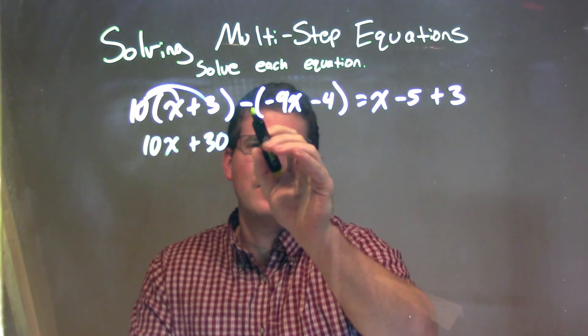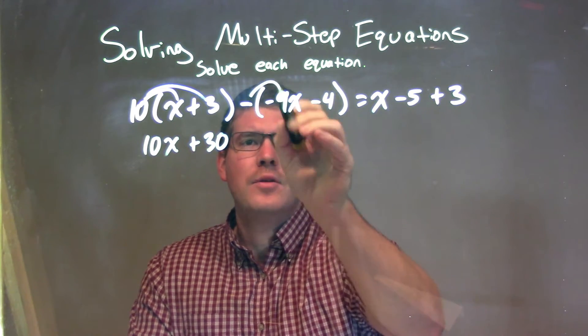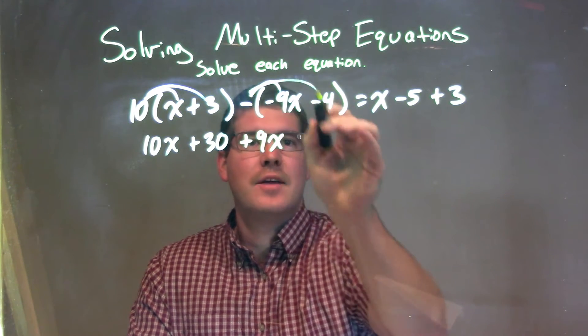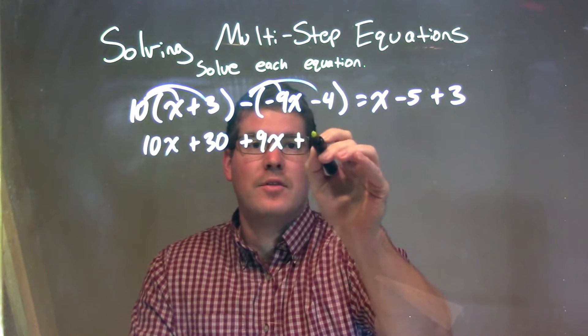From there, I also have to distribute this minus sign. Negative times negative is positive, so we have positive 9x here. And negative times negative again is positive, so we have positive 4.